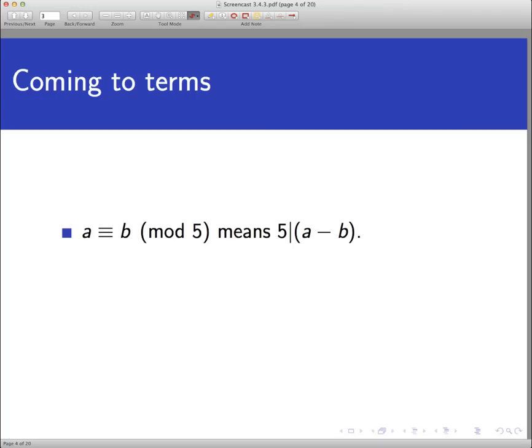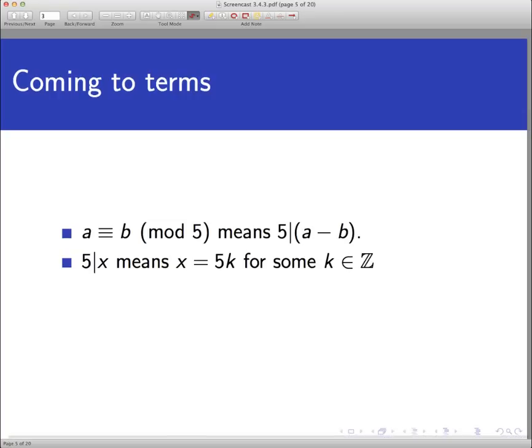The main term here is integer congruence. Recall that a is congruent to b mod 5 means that 5 divides a minus b. Under the surface there's another term — the notion of 5 dividing something. Recall that 5 divides x means that there exists an integer k such that x is equal to 5 times k.